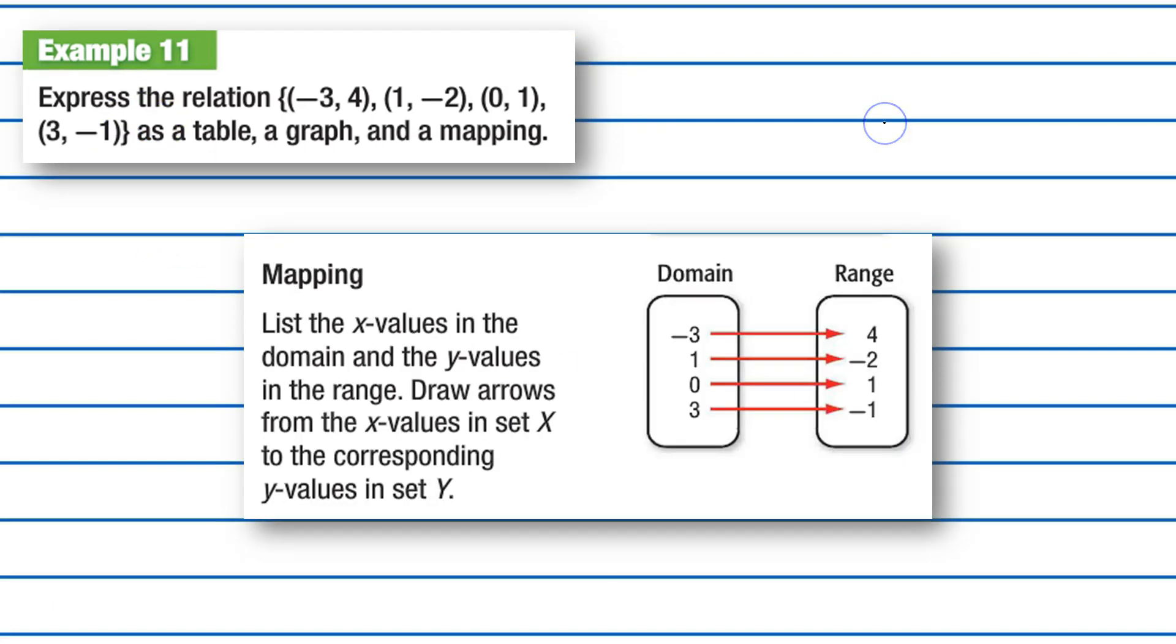And the last thing I need to show is a mapping of it. 3 goes with 4, 1 goes with negative 2, 0 with 1, 3 with negative 1. However, if I had another one, let's say, with, if I had 3 and 1, then it would also connect there. But in this case, I don't. And that's it. Thank you.